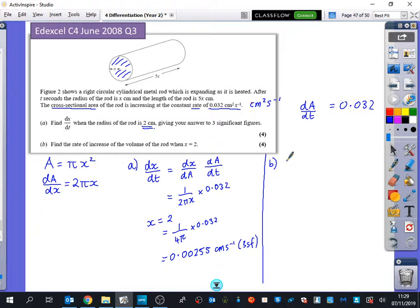Part B, though, they are asking for the rate of increase of the volume also when x equals 2. So as soon as they've introduced this new idea of volume, my instinct is to be like, OK, well, they're talking to me about volume. So I better work out what the volume of this cylinder is. What is the volume of the cylinder? The area of the cross-section times the length. The area of the cross-section times by the length, which is 5 pi x cubed.